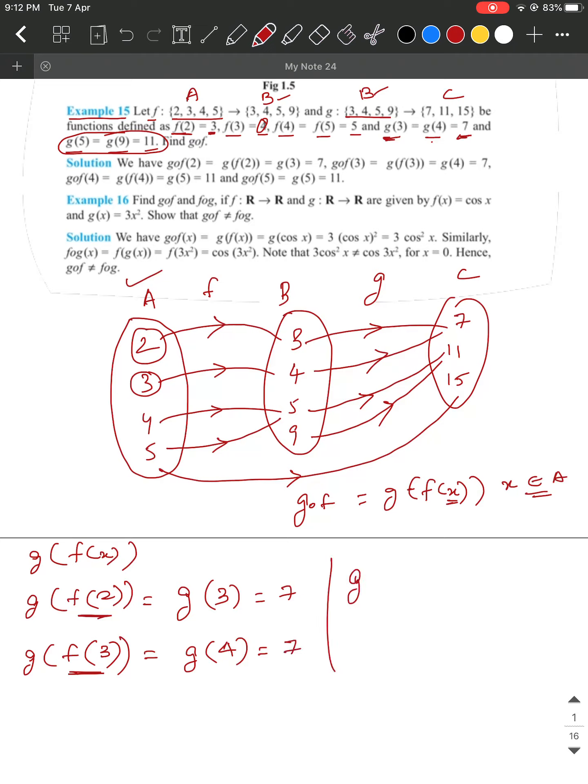Similarly, you have G of F of the third input, which is going to be G of F of 4. What is F of 4? F of 4 is 5. So this is going to be G of 5. G of 5 is equal to 11.